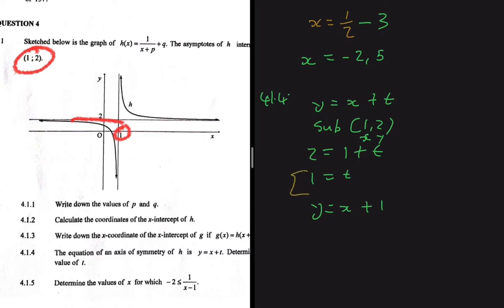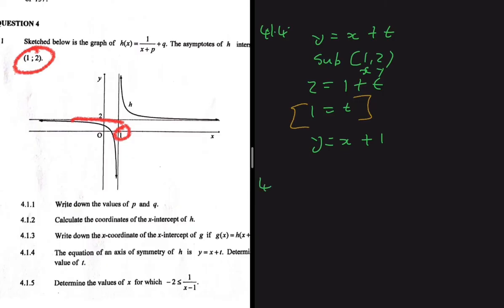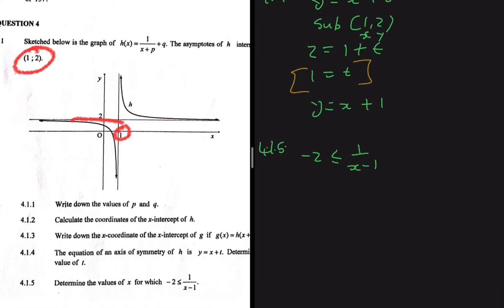For 4.1.5, we need to find the values of x for which -2 ≤ 1/(x - 1). Taking -2 to the right-hand side gives 0 ≤ 1/(x - 1) + 2, which is exactly the equation of our graph h(x). So this question is asking us to find the values of x for which the graph is at 0 or above.